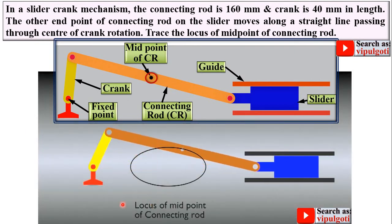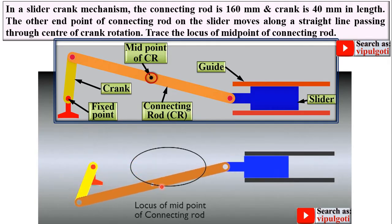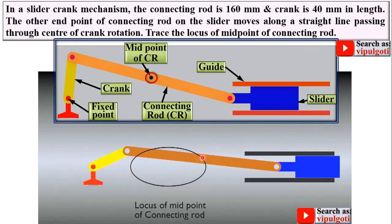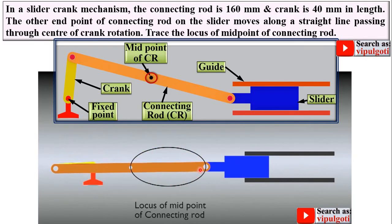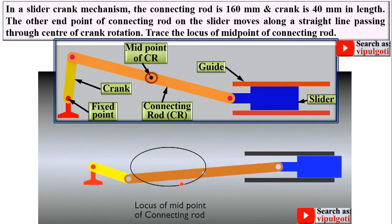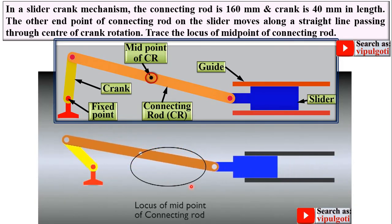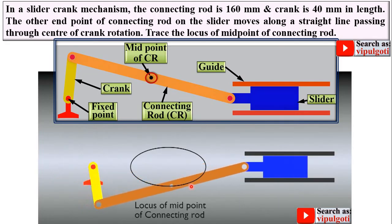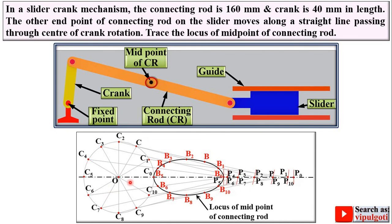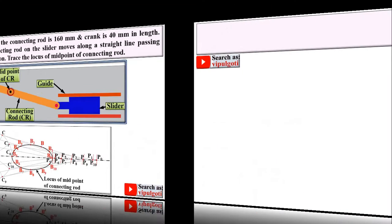Look at the animation — the midpoint of the connecting rod. During one complete revolution of the crank, the path of the midpoint of the connecting rod is this one, and that is what we are going to draw. This is called the locus of the midpoint of the connecting rod. In the examination, you have to draw this locus only dark, and at the end write the name: locus of midpoint of connecting rod. The remaining work should be very light.